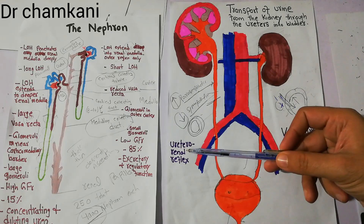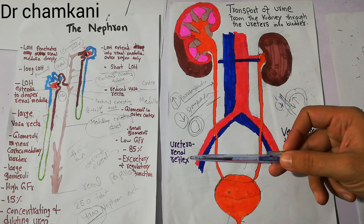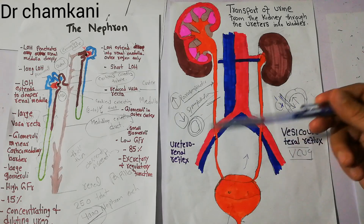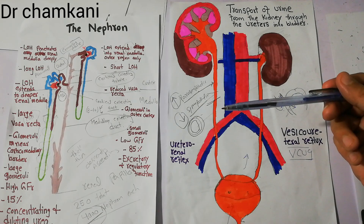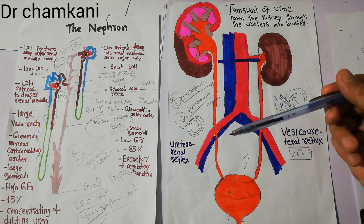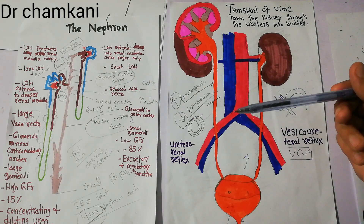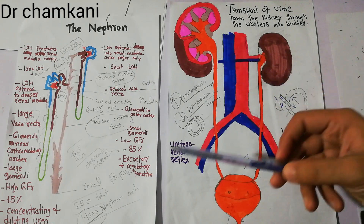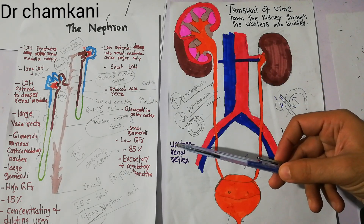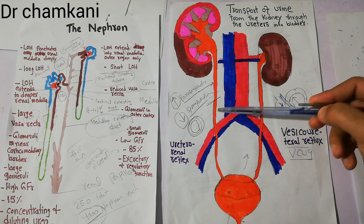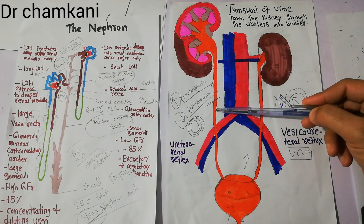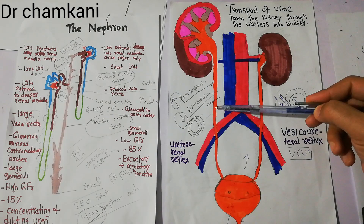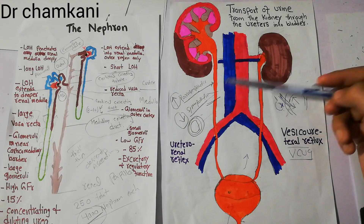Today we will talk about ureterorenal reflex — what it is and why it occurs. This reflex occurs when a ureter is blocked, mostly due to a renal stone.